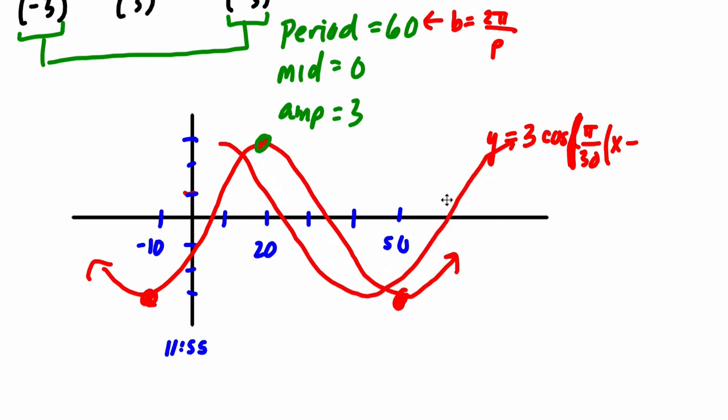So we subtract 20 to make that phase shift happen, right? Because x minus 20, that will pull the wave, essentially shift it 20 to the right. And then, finally, we have our midline, which is at zero, so there's nothing else to write. Okay, this is our function.